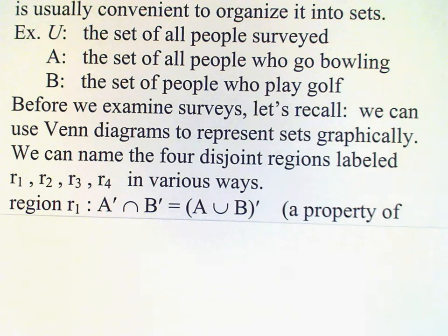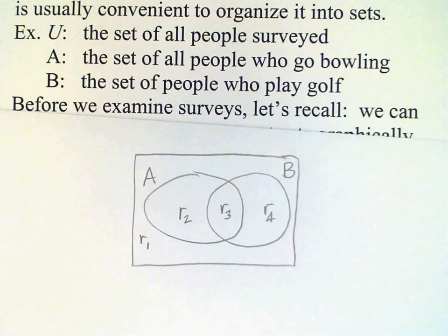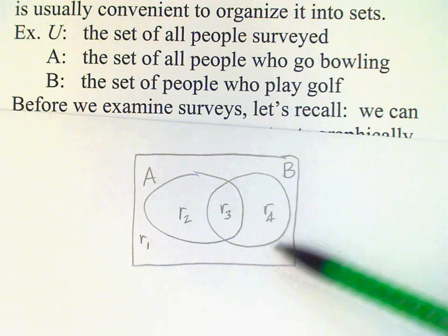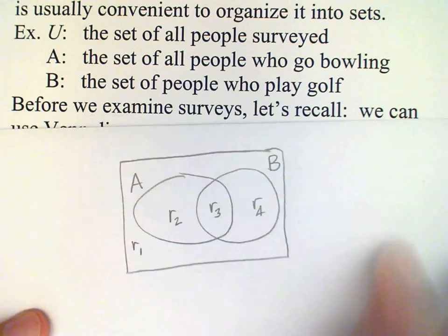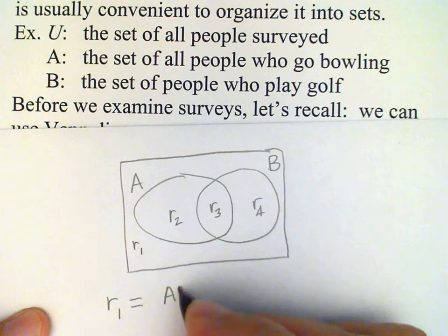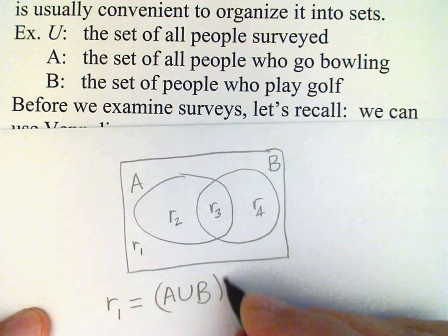Now we can name these regions using various set operations. For example, r1, the region outside of A and outside of B, can be named in at least two different ways. First, we see that it is the complement of the union of A and B, so we could write r1 equals A union B complement.